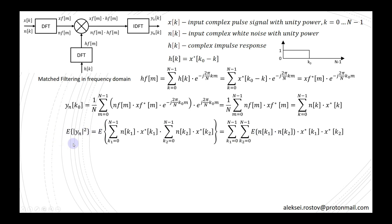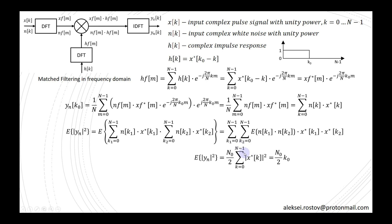In this case, I can rewrite the power of the output noise as the power spectral density of the noise, which in our case equals 1 because I consider white noise with unity power. The power of the input signal is computed simply as a summation over the pulse length; at time k0 I will get the maximum value.